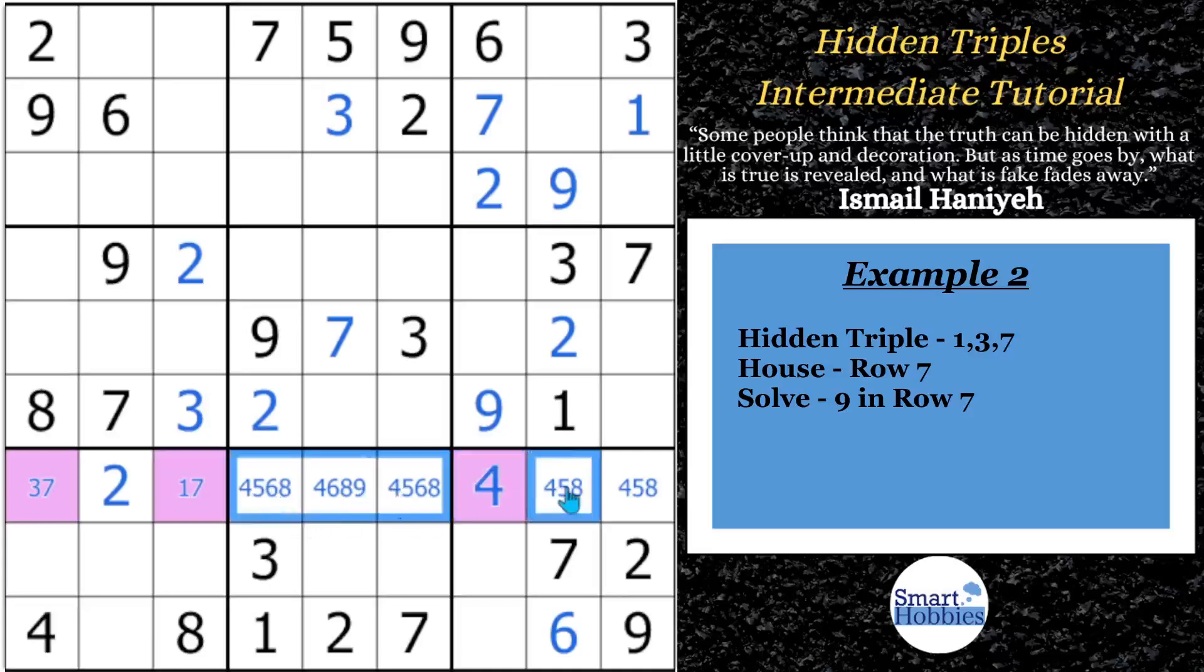Then you can eliminate all of these fours. You end up with a 5, 8 naked pair, which you get rid of the 5 and 8 from those cells. And look, all you have left to put in here would be a 6 in 2 cells. You break the puzzle. So we know we can't put anything other than a 1, 3, or 7 in those pink cells.